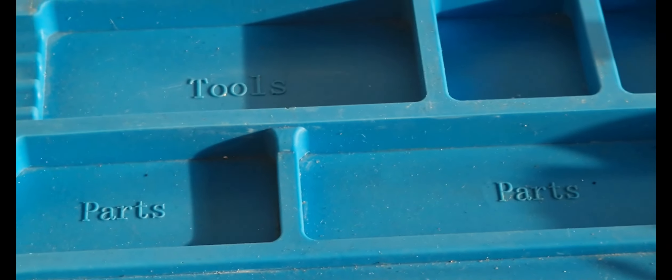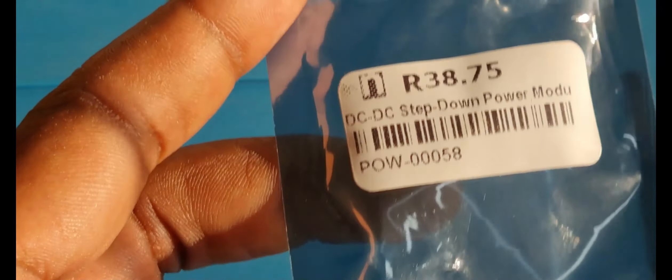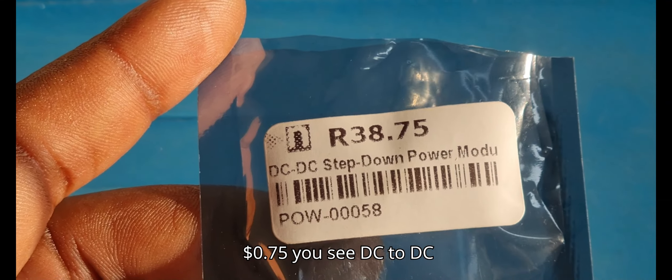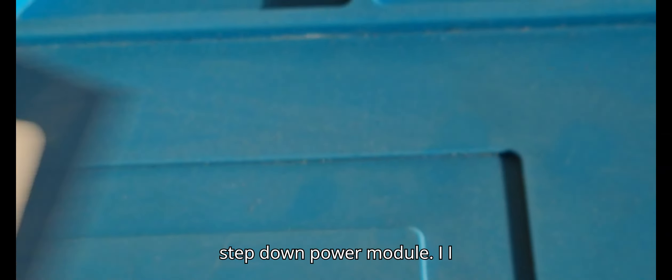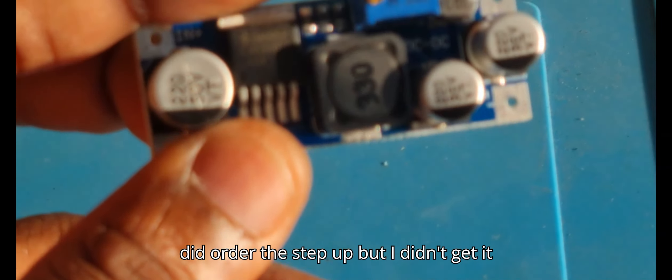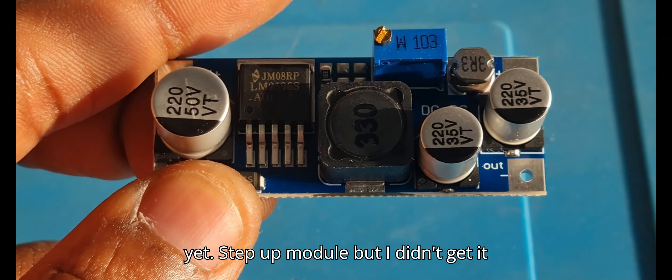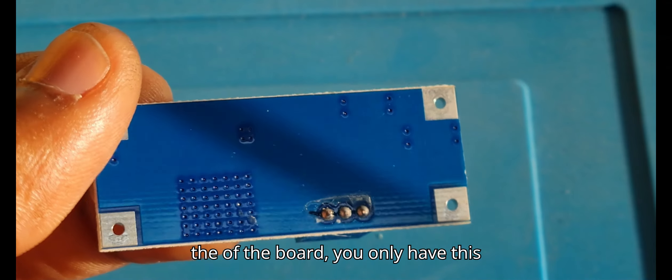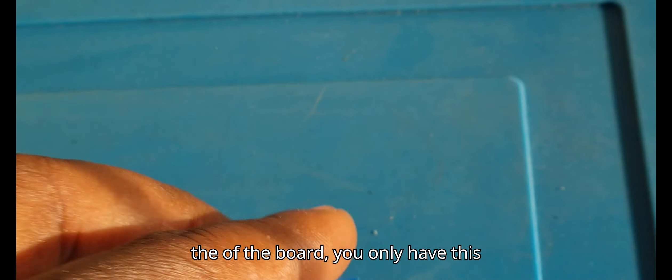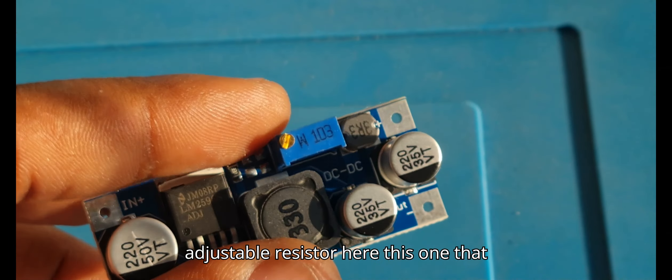So this is a step down one, I got it online for 38 rand, 75 cents. DC to DC step down power module. I did order the step up module but didn't get it yet. On the underside, the other part of the board, you only have this adjustable resistor, which determines the output.